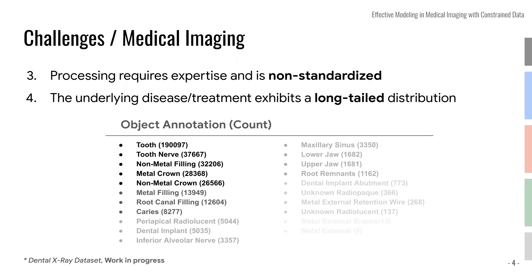These processes are very non-standardized as well. On top of that, the diseases underlying all of these medical tests are extremely long-tailed. For example, in a dental dataset I've been recently using, the most annotated object was actually a tooth — which is natural. But on the far end, we have annotations for objects like retention wire, root remnants that are just part of a tooth still left inside your cavity. The portion of object annotations are really long-tailed.